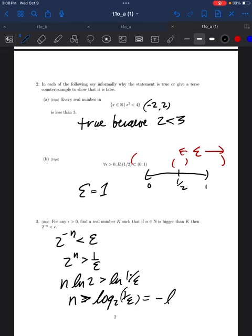If you want to be fancy, you can write that as minus log base 2 of epsilon. And you're done. This relies, of course, in the fact that the exponential function and log are increasing so that they preserve order.